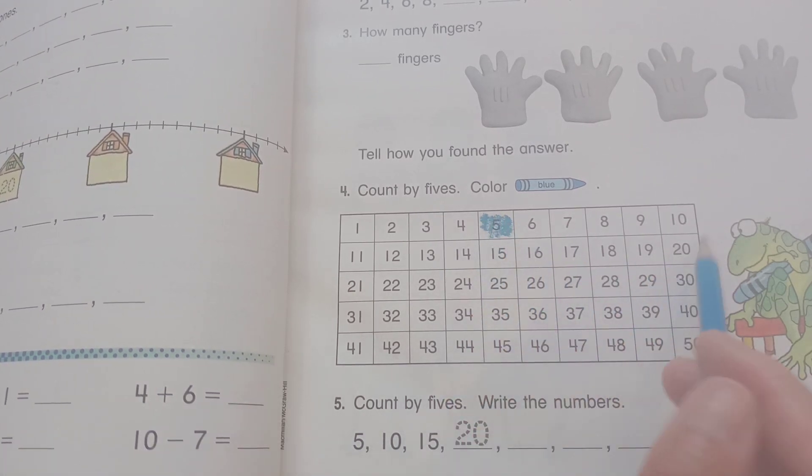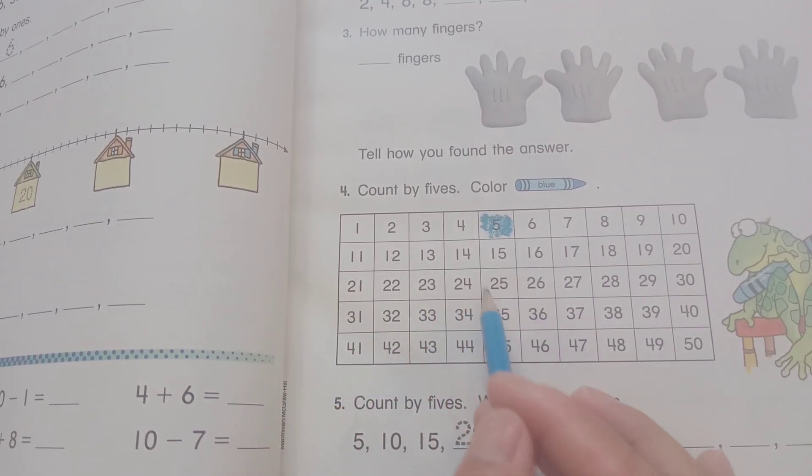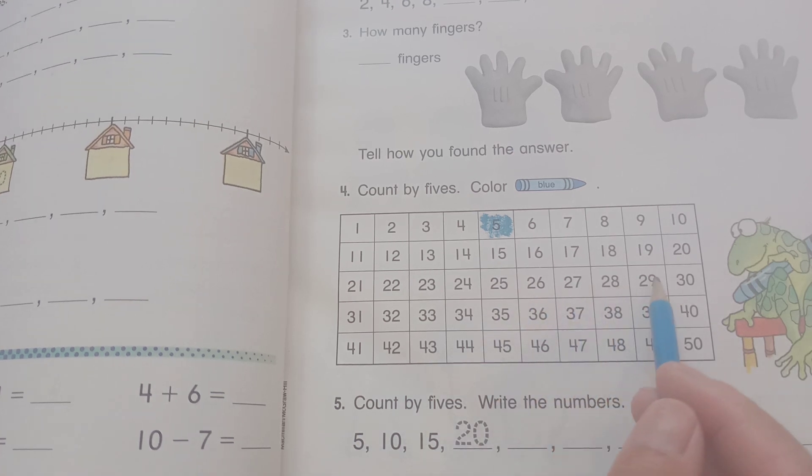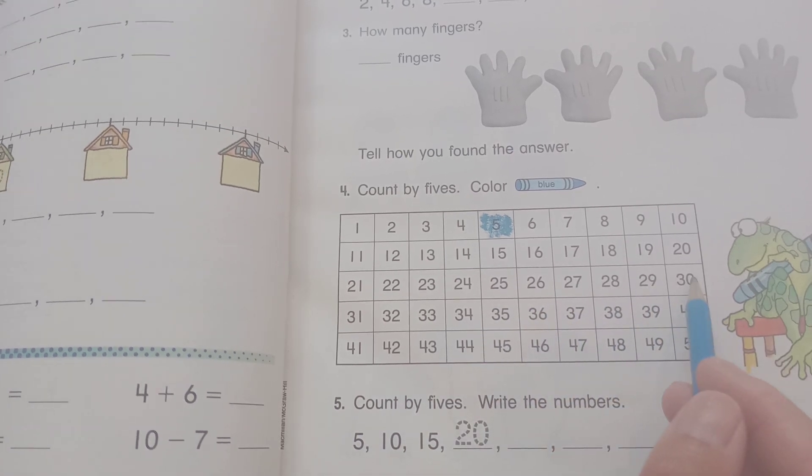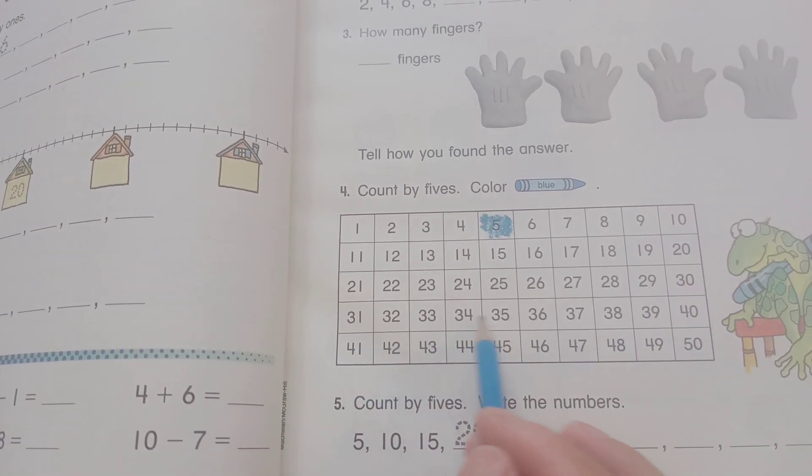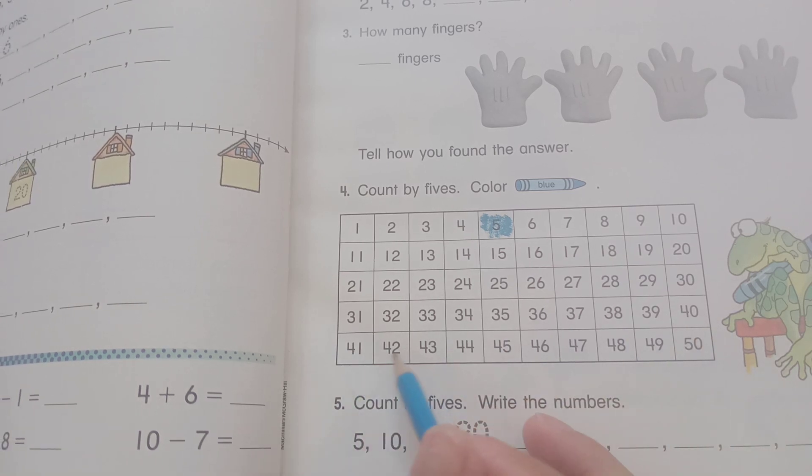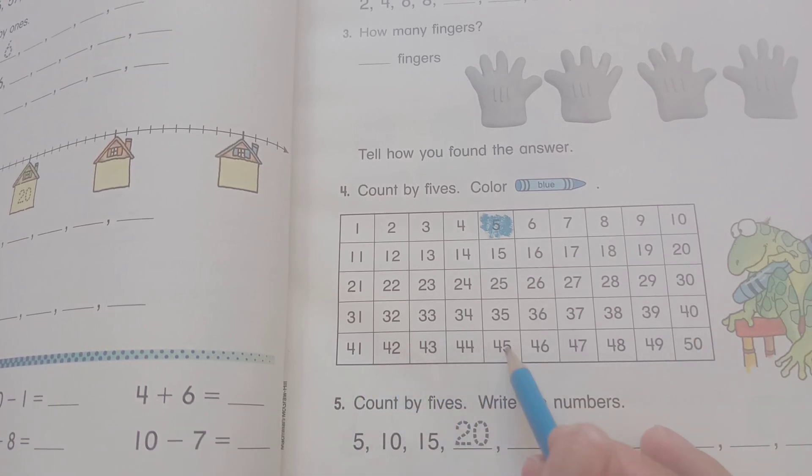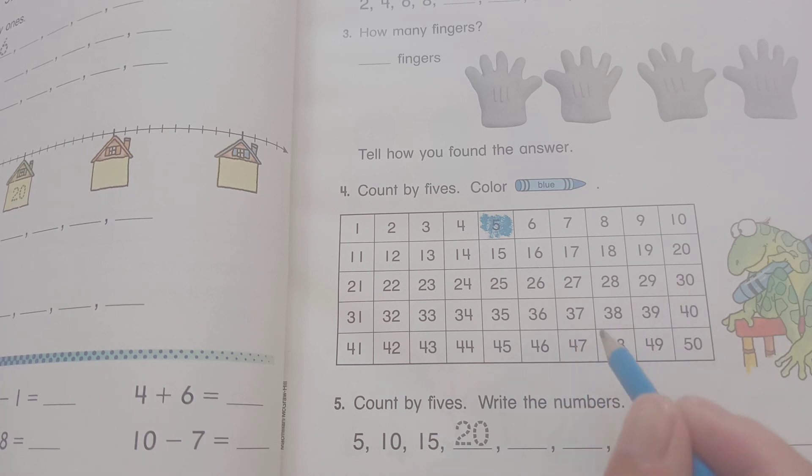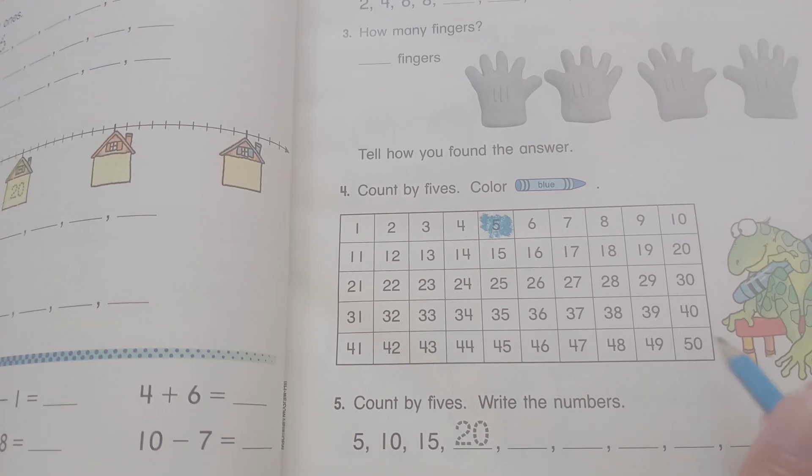You can count: one, two, three, four, five, six, seven, eight, nine, ten, eleven, twelve, thirteen, fourteen, fifteen, sixteen, seventeen, eighteen, nineteen, twenty. Twenty-one, twenty-two, twenty-three, twenty-four, twenty-five. Thirty, thirty-one through thirty-five. Forty, forty-one through forty-five, and continue to fifty.